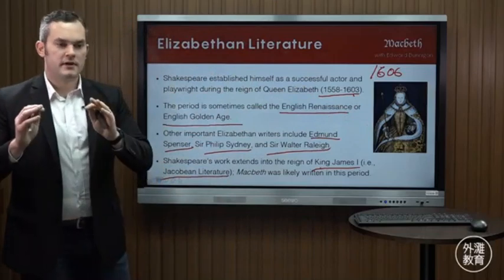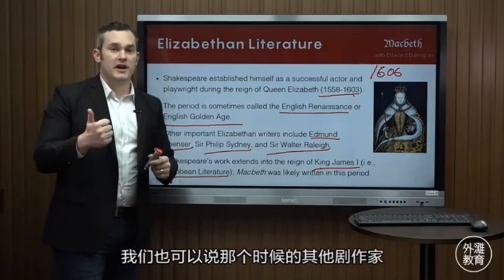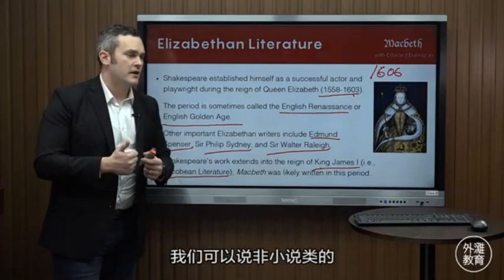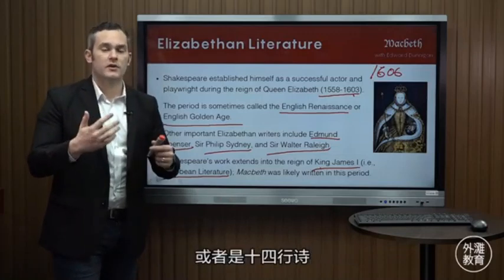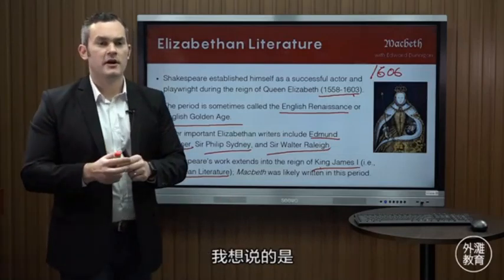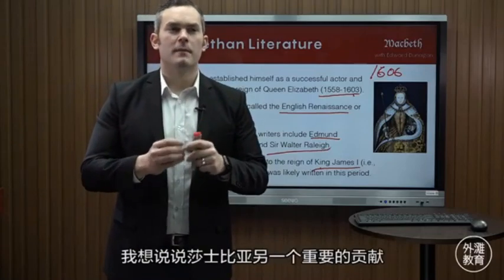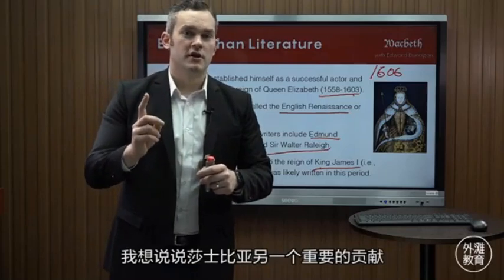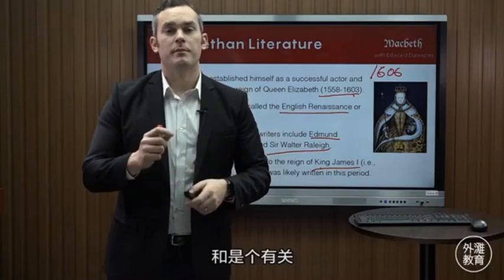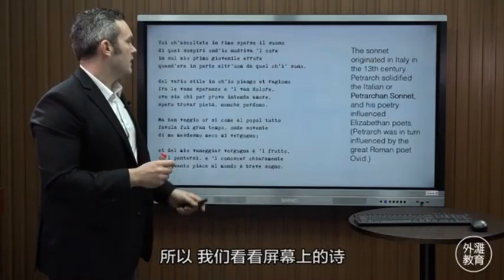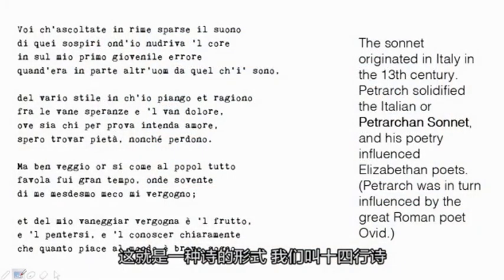We could talk a lot about Elizabethan literature — the other playwrights, the nonfiction, the poetry, and so on. But since we're going to be focusing on plays, namely Macbeth, I want to talk about one other important contribution to Elizabethan literature that Shakespeare made that had nothing to do with plays and had to do with poetry. What we see here on our screen is a kind of poem called a sonnet.